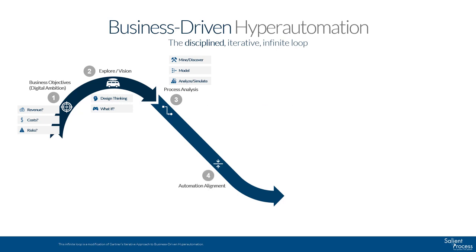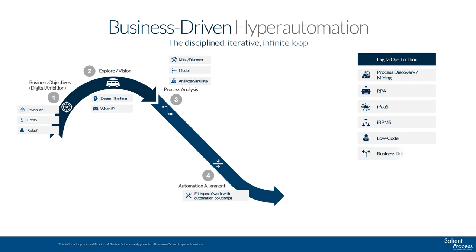This leads us to the Automation Alignment Matrix, which is a matrix Salient Process created to fit the type of work being done with the most appropriate automation technology. The matrix was created because our customers were struggling to determine which automation tool to use given their situation. The tools Gartner lists as being part of the Digital Ops Toolbox make up what our matrix aligns with. Automation alignment is a very crucial step that makes sure you avoid the 'I have a hammer so everything looks like a nail' problem. We will cover the Automation Alignment Matrix in another presentation in this series. It is a vital step to make sure you are using the right automation tool at the right time and the right place in your processes.